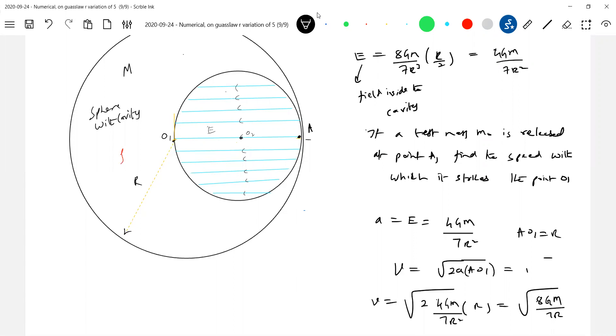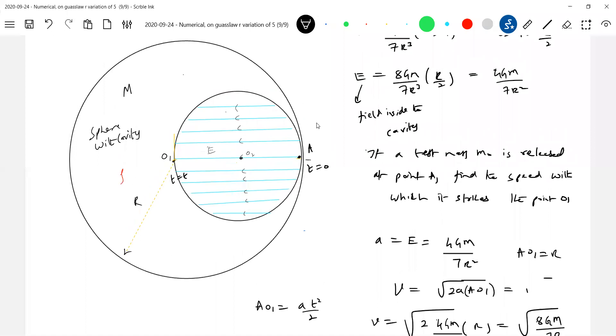What is the time it will take to reach there? Apply equations of motion. AO should be equal to at square by 2. If t equals 0 it is removed, here after some time t it will come and strike here. I can bring so many numerals here. I can suspend a pendulum, I can ask you vertical circle motion problem here, instead of g you should take that E. Instead of g, the a will come into picture and it will be directed along line joining the center of the cavity to center of the sphere. This was the total discussion what we made.